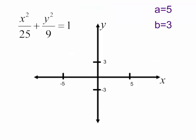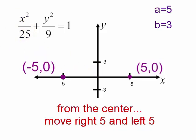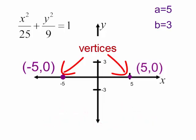We could quickly graph this. Under the x-squared is 25, which is 5-squared. So on the x-axis, I will move to the right 5. I will also move to the left 5. These are the vertices of this ellipse. Under the y-squared term, I have 9, which is 3-squared.